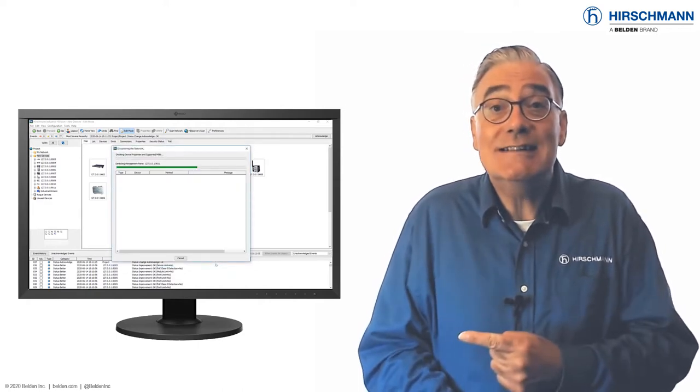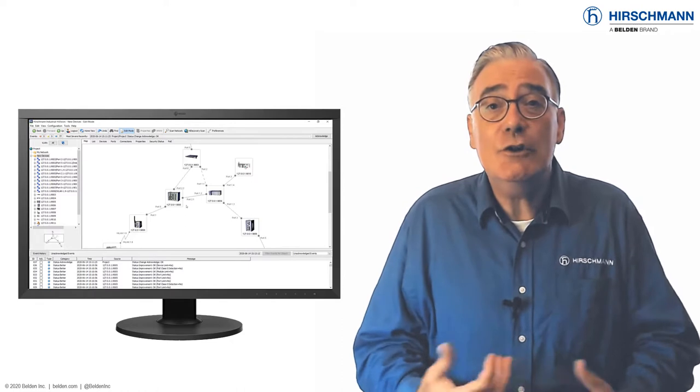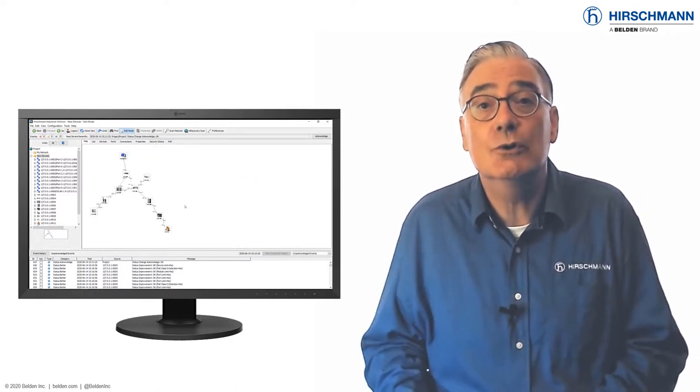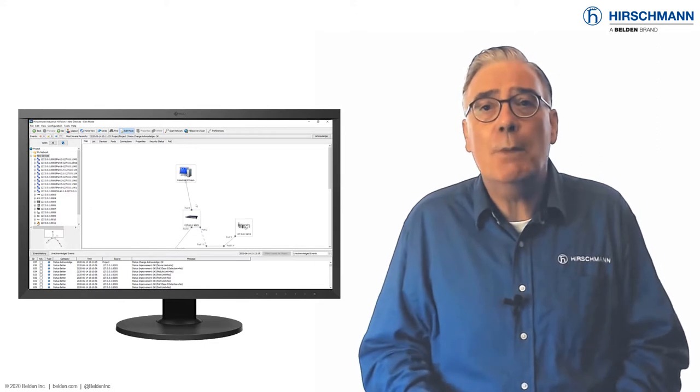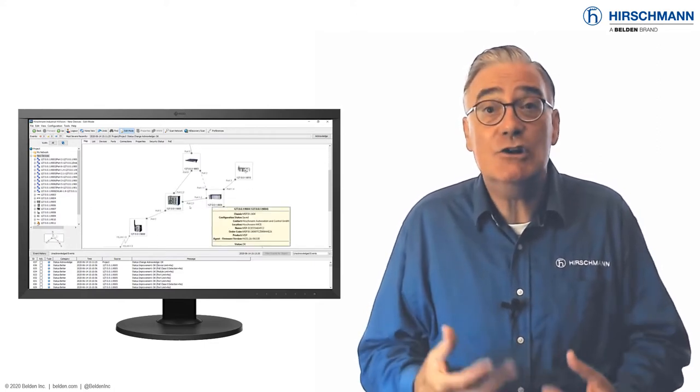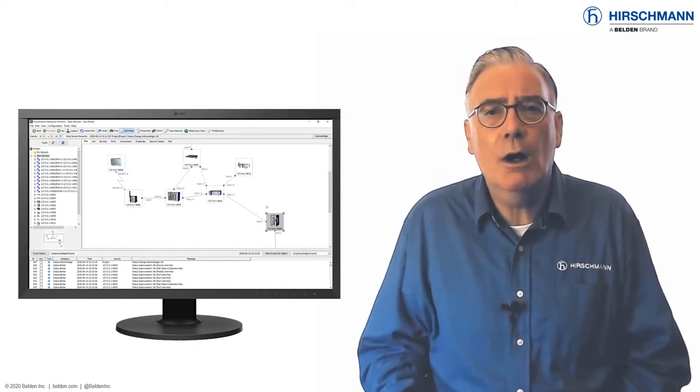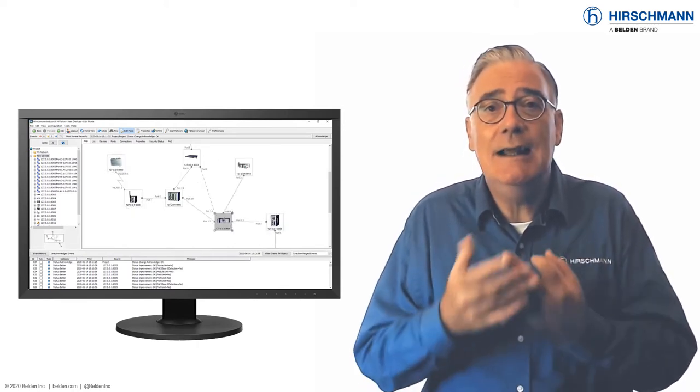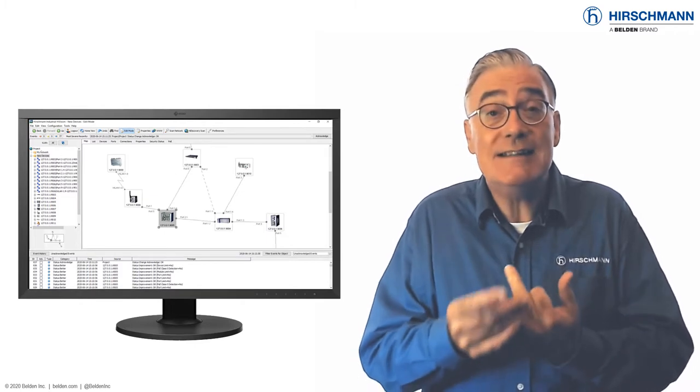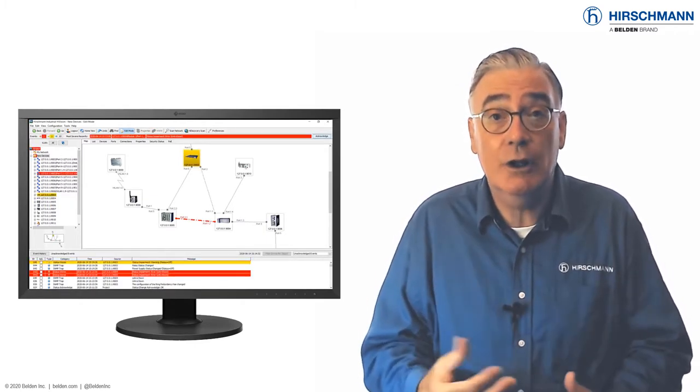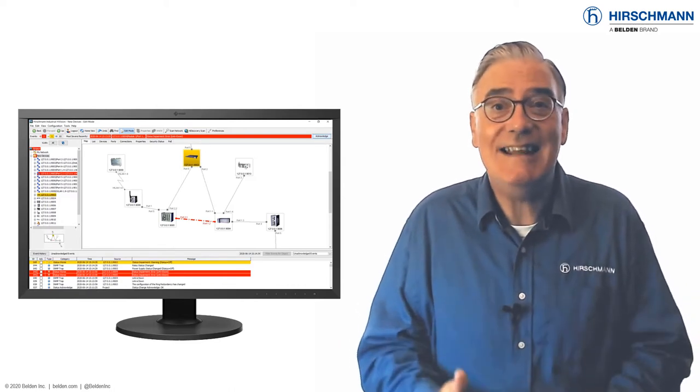As you can see on the left, Industrial HiVision is a highly graphical supervision tool. Network topology maps are a major feature of the software. Each component of a network such as switches, end devices, and physical connections have a visual representation complete with status colors.